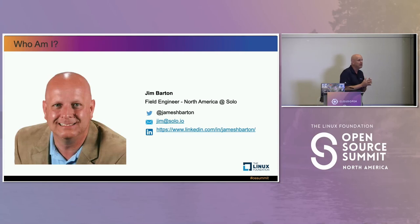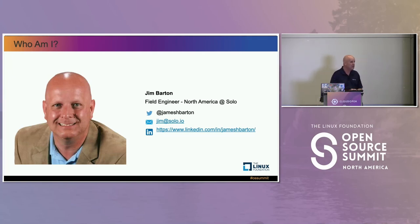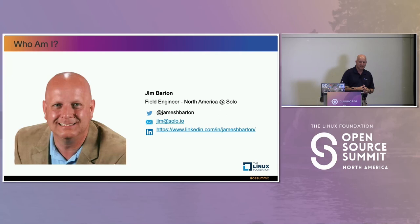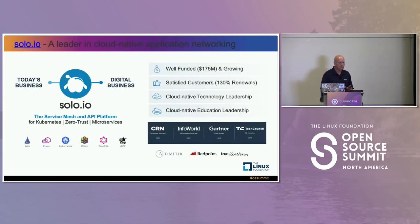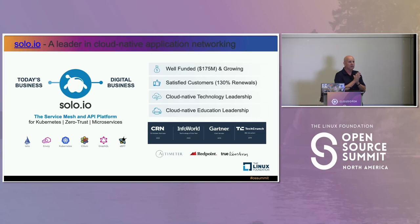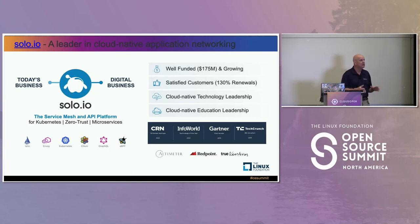My name is Jim Barton. I am a field engineer with Solo here in North America. My career in the enterprise community spans three decades. I've been with Solo for nearly three years now, and prior to Solo, I was an enterprise software architect at companies like Amazon, Red Hat, and Zappos.com. Solo is a company that was born in the cloud that specializes in helping enterprises manage the complexities of application networking in a cloud-native context, via community leadership in strategic open-source projects like the Istio Service Mesh, Envoy Proxy, and GraphQL, as well as enterprise-grade products and services based on those projects.